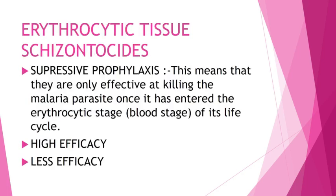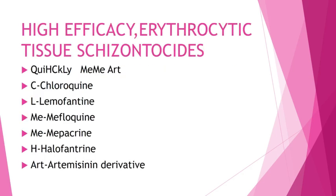Erythrocytic schizontocytes are used for suppressive prophylaxis — effective only at killing the malaria parasite once it has entered the blood stage. This class has two groups: high efficacy and less efficacy. For high efficacy, the mnemonic is QUICKLY MIMART: Q for chloroquine, L for lumefantrine, H for halofantrine, M for mefloquine.